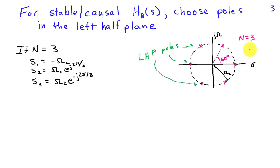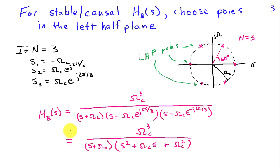So, we get a pole at negative omega c on the real axis. We have poles in complex conjugate pairs at omega c times e to the j 2 pi over 3 and e to the j minus 2 pi over 3. Putting all this together, we can find Hb of s, the transfer function in the s domain, and if we multiply things out, we get that it has omega c cubed divided by s plus omega c times s squared plus omega c s plus omega c squared. That's the transfer function for a third-order Butterworth filter.